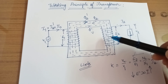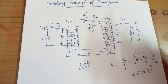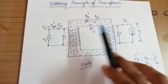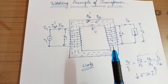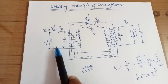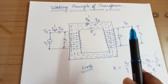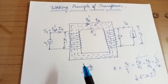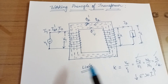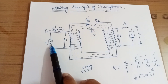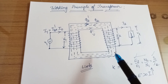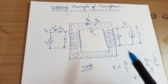A transformer is a static device — it has no rotating parts. A transformer is a static device which transfers electrical energy or power from one circuit to another circuit at constant frequency but at different voltages and different currents. Throughout this operation the frequency remains constant.